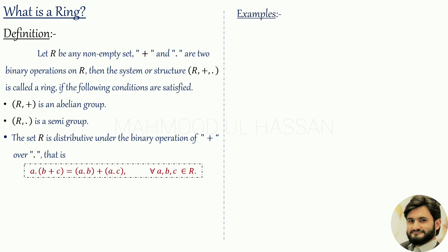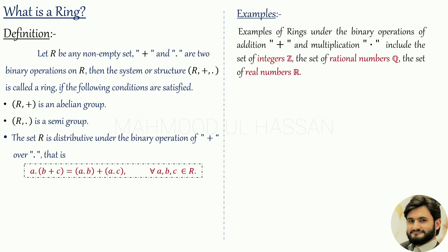Now, examples. Examples of rings under the binary operations of addition and multiplication include the set of integers, the set of rational numbers, and the set of real numbers, etc. Now, question: show that the set of integers Z is a ring. We know that the set of integers is non-empty. Now we check the three ring conditions.